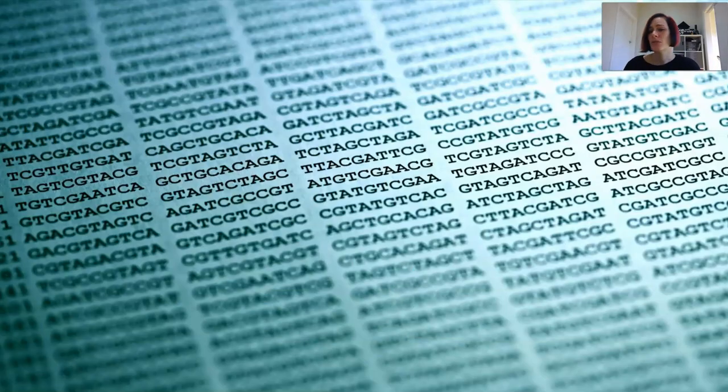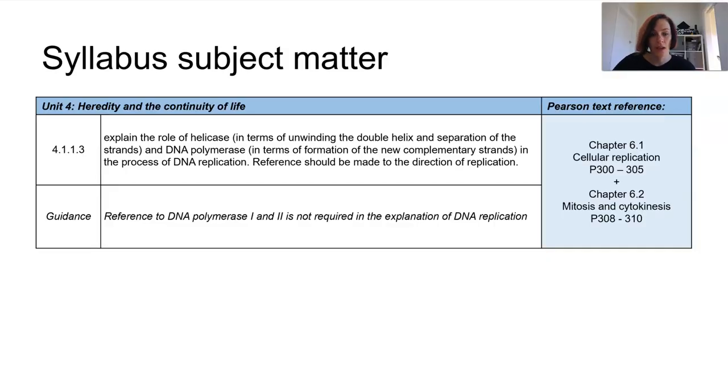So it really is a truly stunning process. It's occurring at around 50 base pairs per second. And it's incredible how accurate the process actually is, and that there are checks and balances in there to fix errors that do occur. So when you think this could be happening to the 3.2 billion base pairs across your 46 chromosomes in any of your 15 trillion cells, the accuracy at which this process occurs is really stunning. So this is part of our cellular replication information, really important to understand the roles of helicase and DNA polymerase.